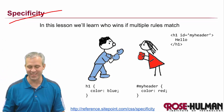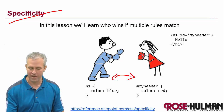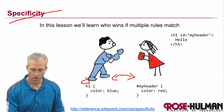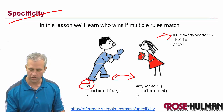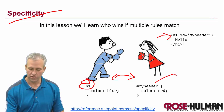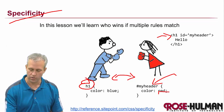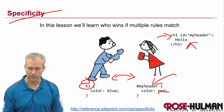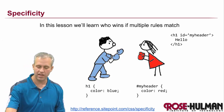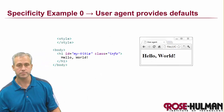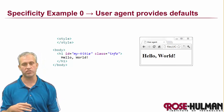Specificity is a term that relates to deciding who wins. Let's say that there are two rules that both match an element. One says all H1s on the page should be blue, and there's a competitor that says this one should be red. It turns out that red would win. But how does this process work when there are conflicting rules? How do you decide who gets the win? We're going to go through a number of examples and talk about how the browser decides what to do.